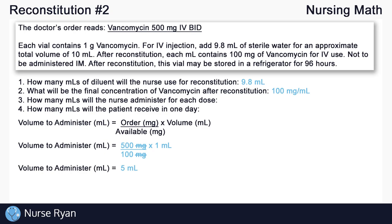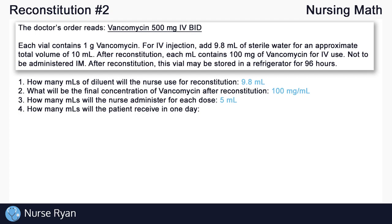Finally, question number 4: How many mLs will the patient receive in one day? We already know the patient receives 5mLs per dose. We need to know how many doses per day — looking back at the doctor's order, vancomycin 500mg IV BID, the frequency is BID, meaning two times a day. So the patient receives two doses each day. Multiplying 5mLs per dose by 2 doses per day gives us 10mLs per day.